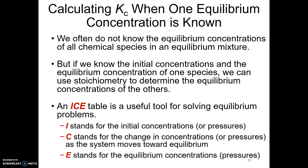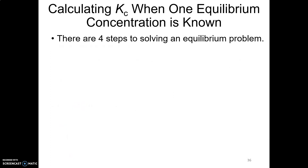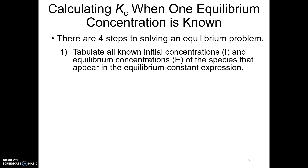We're going to do this ICE table underneath our reaction. I'll work through one on the slide, and then I'll work one out on a piece of paper. So before we do one, let's talk through the steps. Step one is to figure out everything that you know: set up your ICE table, put initial concentrations under I, equilibrium concentrations under E, and go ahead and write your K expression.